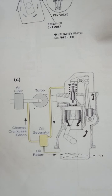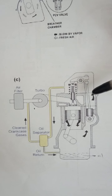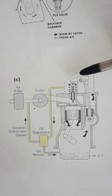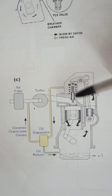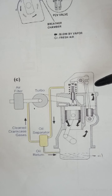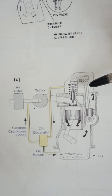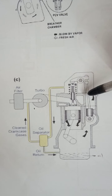Good morning friends. Today we will discuss about positive crankcase ventilation. Before proceeding to the topic, let us see what is positive and what is negative pressure. Positive pressure is any pressure which is in the compressed state — if the air is in a compressed state, that pressure is called positive pressure. If it is in a vacuum state, that pressure is called negative pressure.